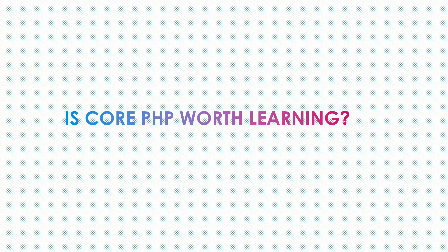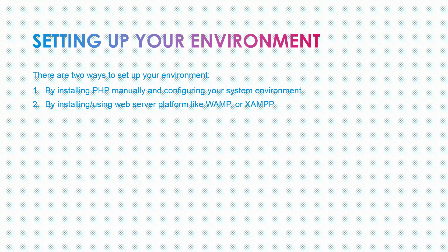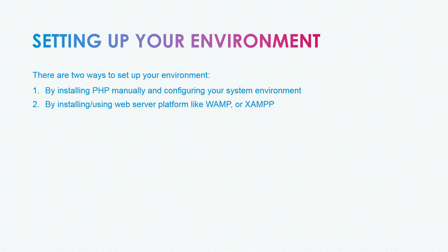Before we can start writing PHP code, we need to set up our environment. There are two ways to do this. Number one is by installing PHP and Apache and configuring your system environment yourself. Number two is by using a web server platform like WAMP, LAMP, or XAMPP. Since the point of this course is to teach you the basics of PHP programming, we'll stick with using a web server platform, because configuring Apache and PHP could be very difficult, especially for a beginner.